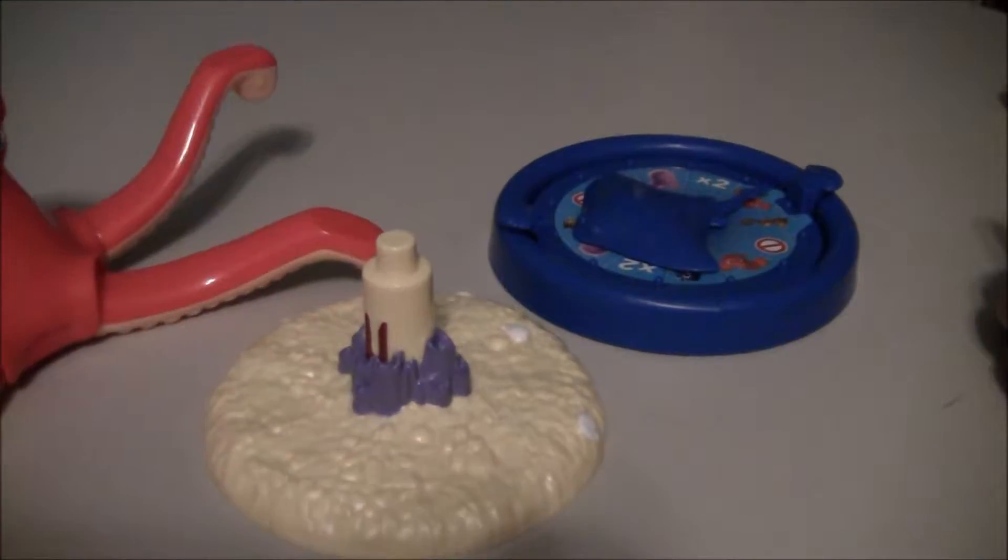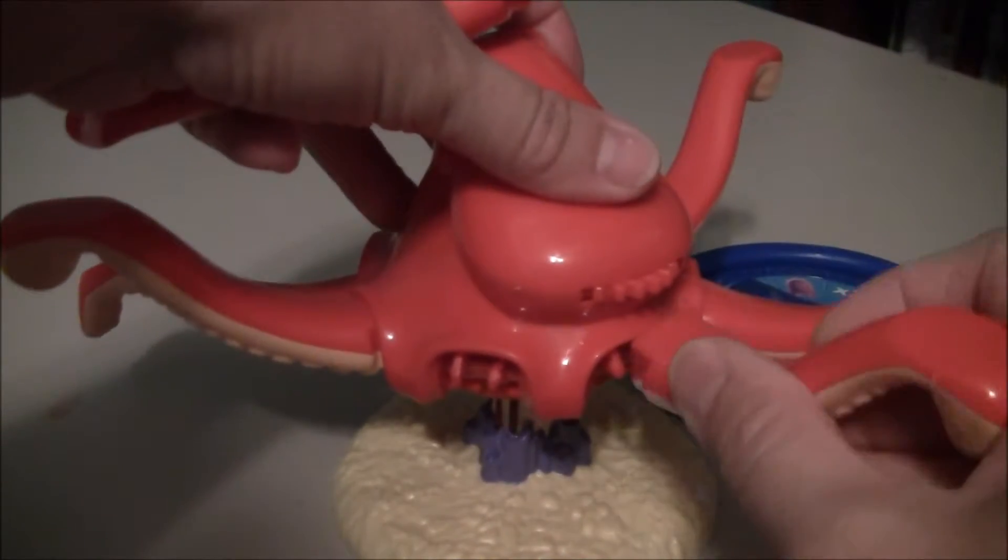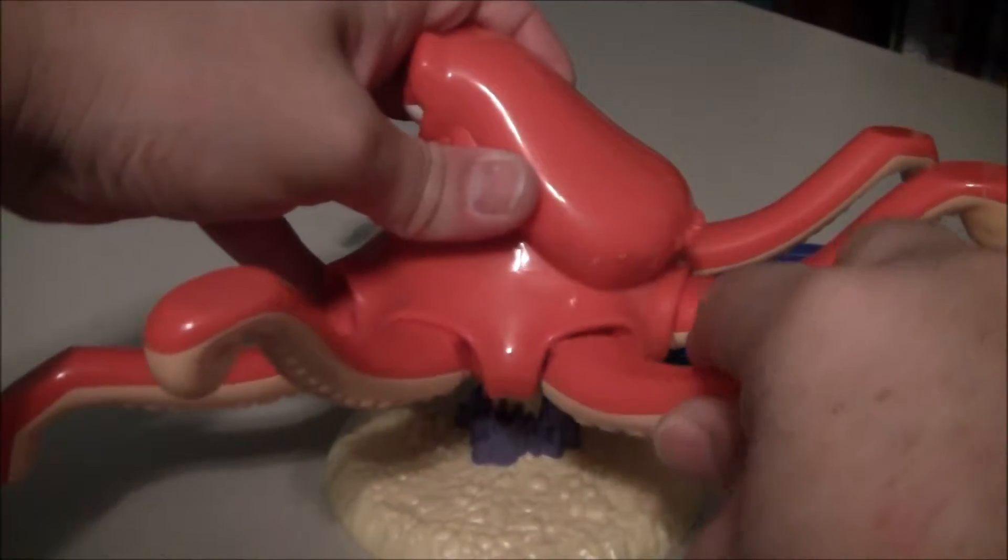So what we got in the box is Hank. And all you got to do is put him on the stand and then his legs came separate. So you just pop the legs on and they just snap right into place and they're really easy.